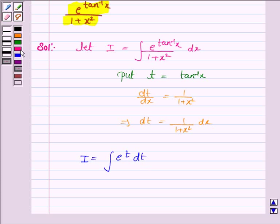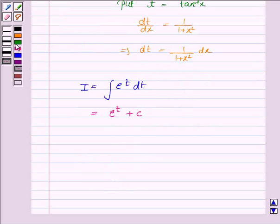We know that the integral of e to the power t dt is e to the power t plus c. So this is equal to e to the power t plus c where c is the constant of integration.